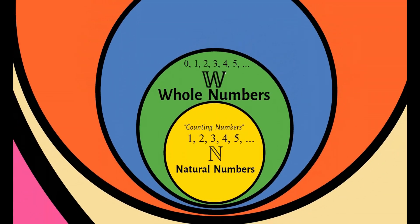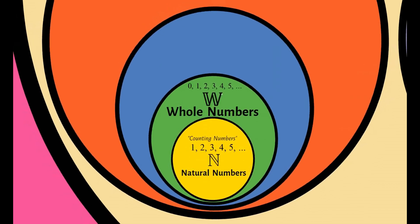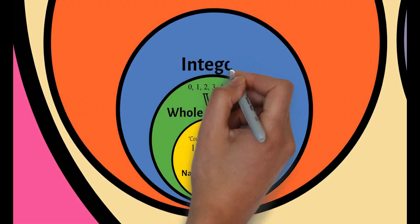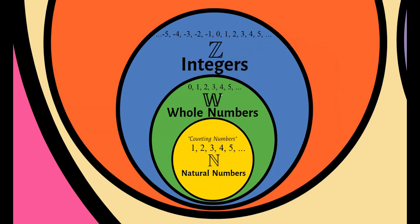The next classification of numbers are integers. Integers are often denoted as this symbol. This includes all whole numbers and yung mga negatives nila.